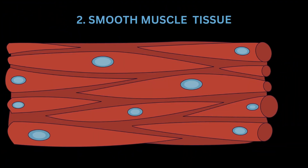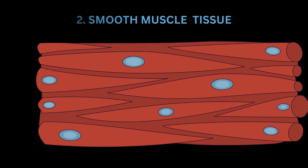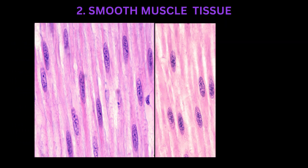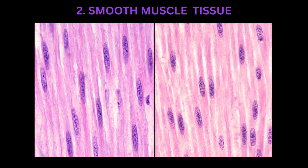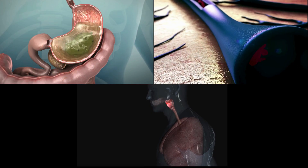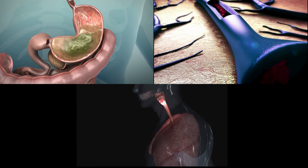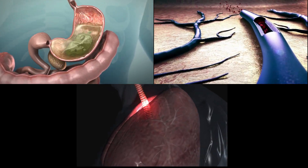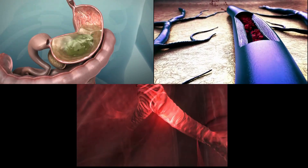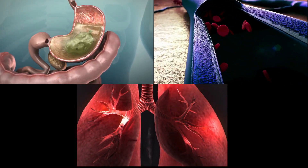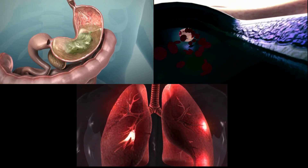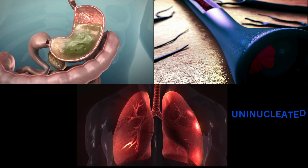Smooth muscle tissue lacks striations, appears smooth under a microscope, and has spindle-shaped cells. It is typically under involuntary control and functions in various organs to regulate processes such as digestion, blood flow, and respiratory function. It is found in the walls of internal organs, blood vessels, and other structures like the digestive tract. Smooth muscle is uninucleated.